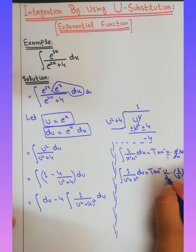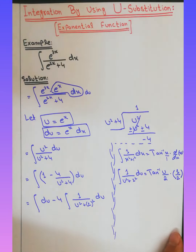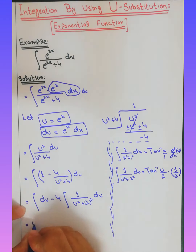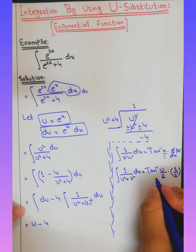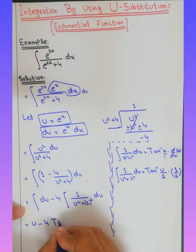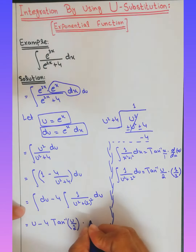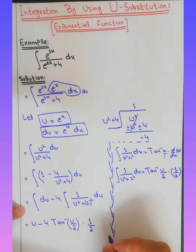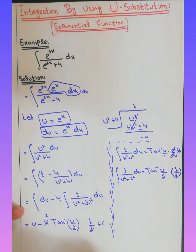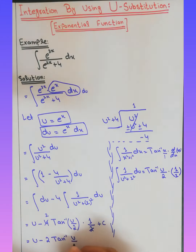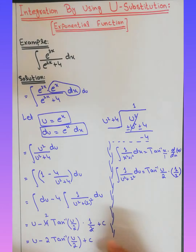So we get: u minus 4 times tan inverse of (u/2), multiplied by 1/2, plus constant c. Simplifying: u minus 2 times tan inverse of (u/2), plus c.